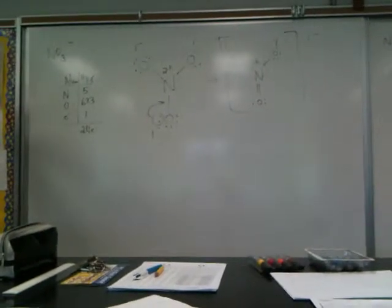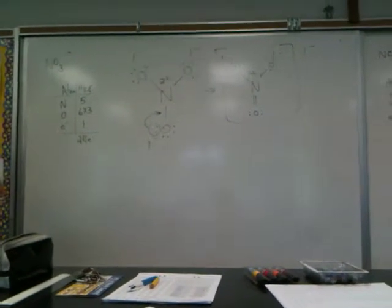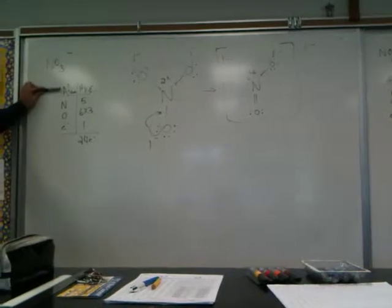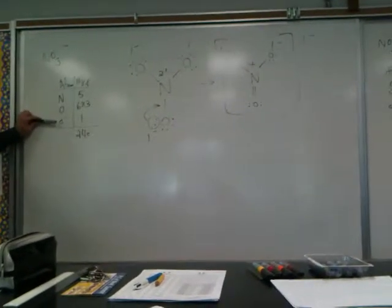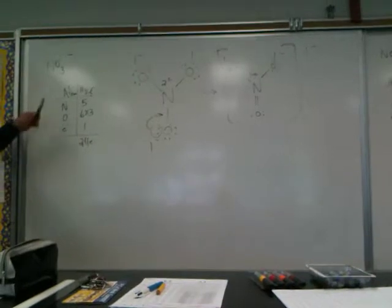We have a nitrate anion, and we're going to draw the Lewis structure for nitrate. So the first thing we do is find out how many valence electrons are in nitrate, in all the atoms that make up nitrate.